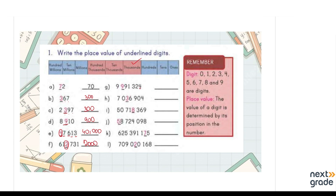Next we have a 7-digit number. Counting place values: 1, 2, 3, 4, 5, 6, 7. Reading from the right — 1s, 10s, 100s, 1,000s, 10,000s, 100,000s — the underlined digit is at the 100,000 place, so it's 900,000. For another 7-digit number where the 5th digit is underlined, that's the 10,000 place, giving us 30,000. For an 8-digit number with the 4th digit underlined, that's the 1,000 place, so we write 8,000.